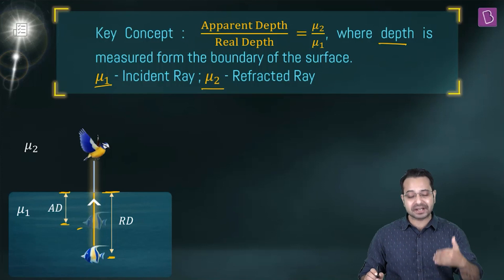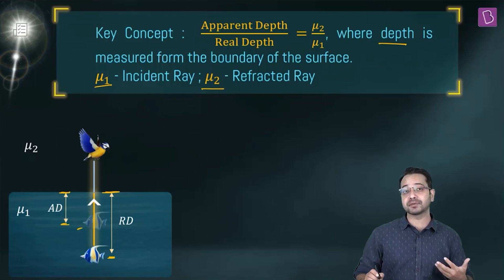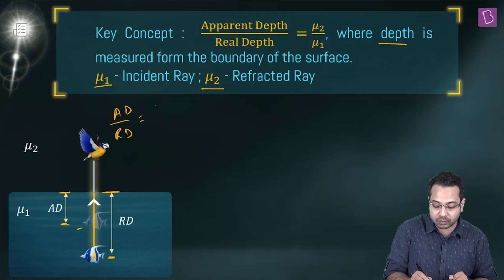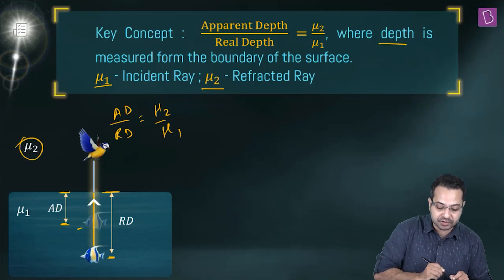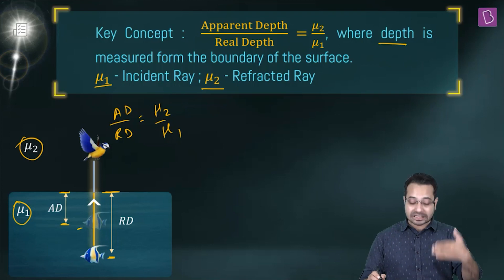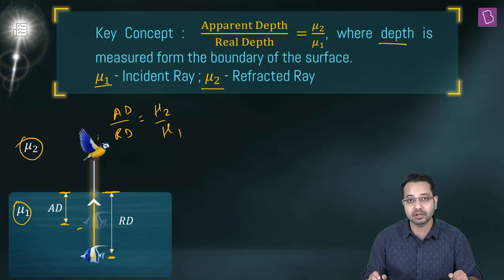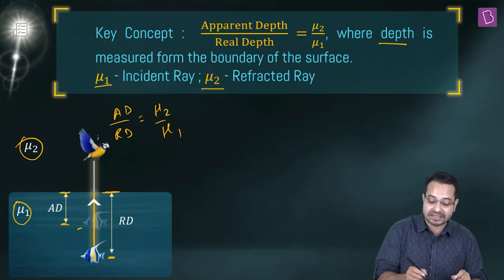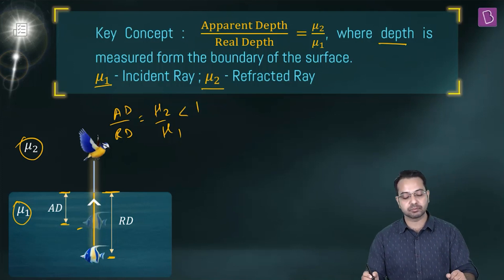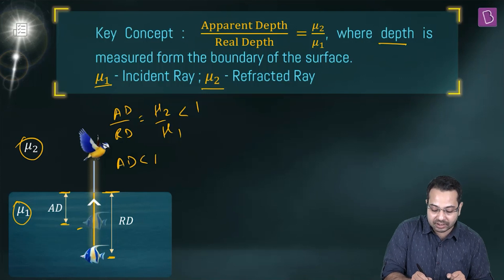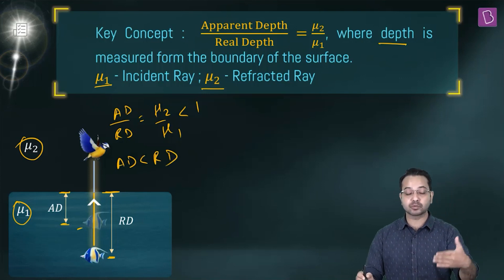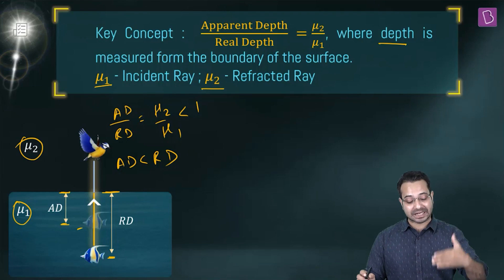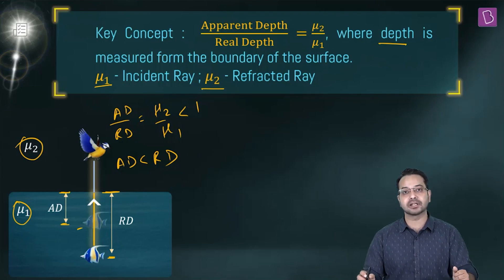The angle of refraction is 90°. When light goes from a denser medium to a rarer medium, μ₁ > μ₂, so apparent depth / real depth = μ₂/μ₁ < 1, meaning apparent depth is less than real depth. The shift happens in the direction of the incident light. This is why the fish appears closer to the surface when viewed from above.